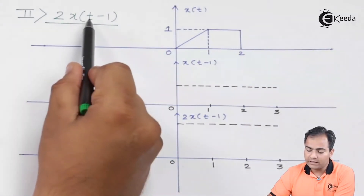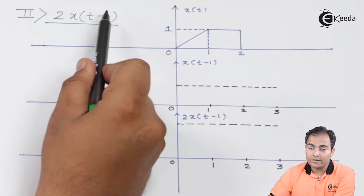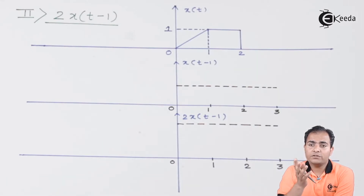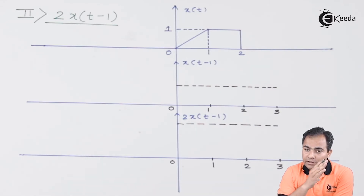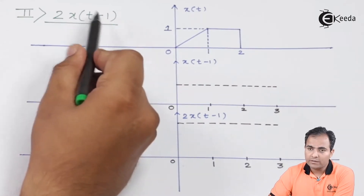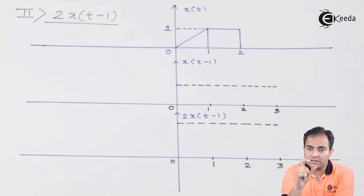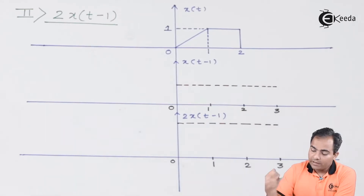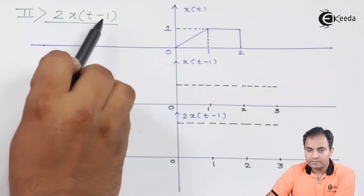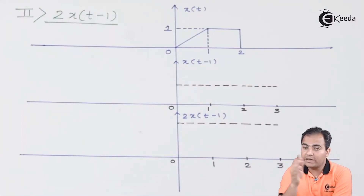The 't minus 1' means we have to perform time shifting. In the time shifting property, the graph may be advanced or delayed. If the minus sign is given, the graph will be shifted towards the right-hand side by the given value — here the value is 1, so the graph is shifted right by 1. This is called time delay. If the sign is plus, the graph is advanced.